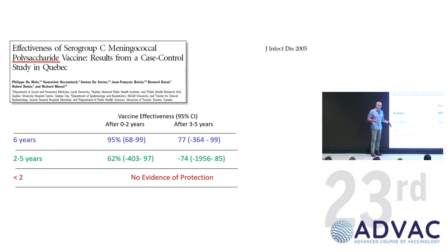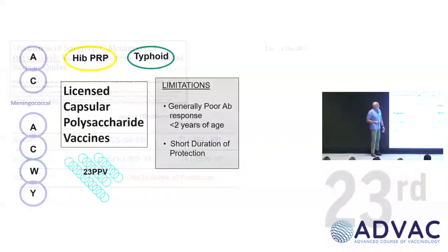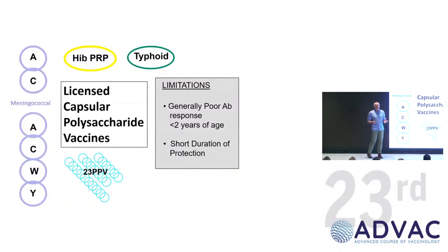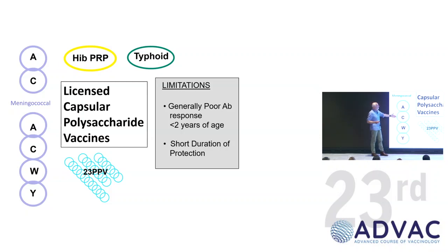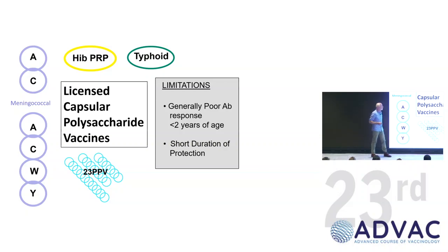So you need an alternative. Many vaccines were developed, and some are still available, based on capsular polysaccharides, but they all have a similar limitation: generally poor antibody response in young children — not always completely absent but not particularly functional — and they all provide a short duration of protection. These have largely been superseded. Haemophilus is historical, typhoid polysaccharide is still available, and 23-valent pneumococcal polysaccharide is still available, but we'll talk about those in more detail.